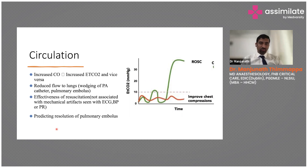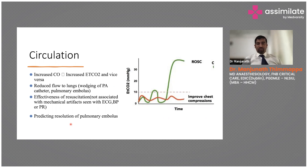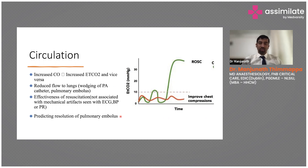EtCO2 also tells us about circulation. In patients with cardiac arrest, we can actually see improved chest compressions and use it for ROSC assessment. It is also useful for predicting the resolution of pulmonary embolism — a patient with pulmonary embolism will have increased dead space and increased EtCO2. Once you start thrombolysis, the pulmonary embolus load decreases and EtCO2 will come down.